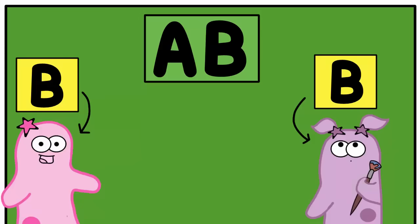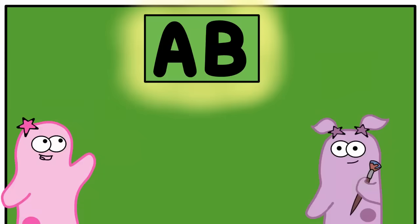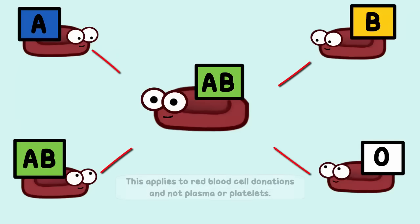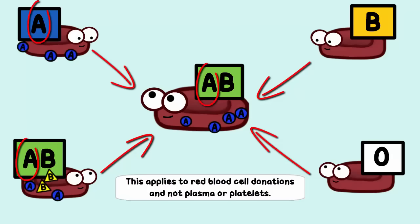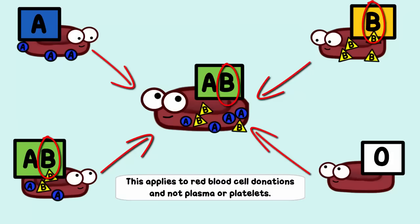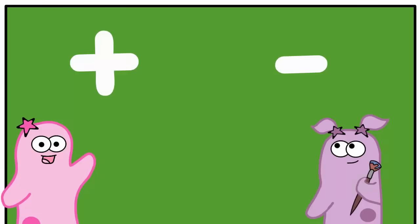Neither of us have type AB blood, but we think it's a cool blood type in the sense that you could receive blood from anyone. If an AB person received blood from a type A person, they've got the A antigen, so it's all good. If an AB person received blood from a type B person, they've got the B antigen too, so it's all good. They can receive blood from type O too, because there aren't any antigens to even worry about.